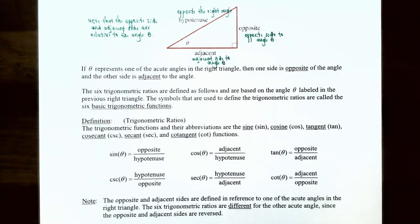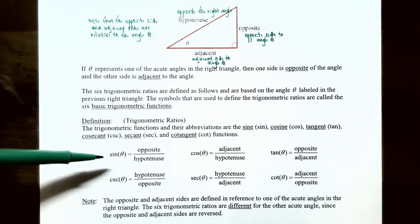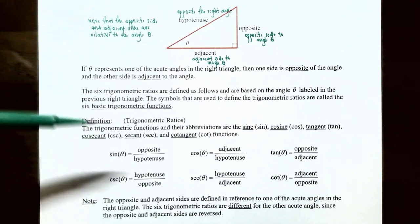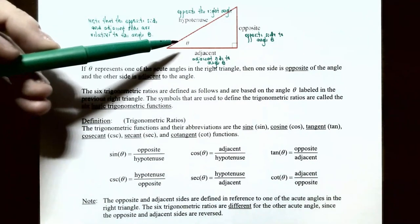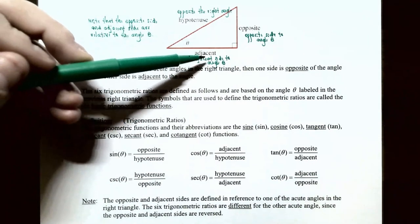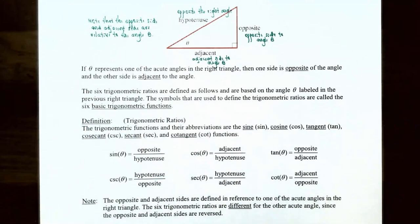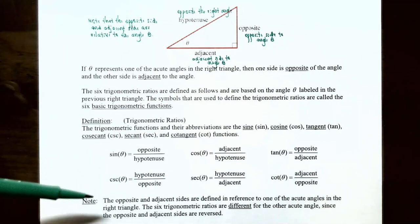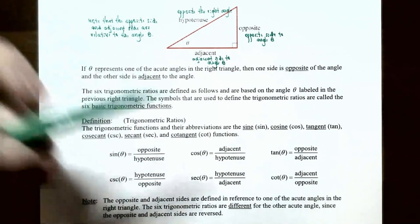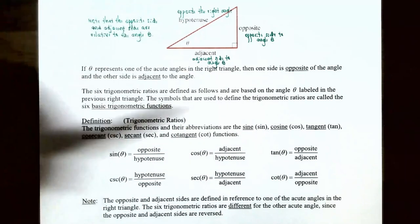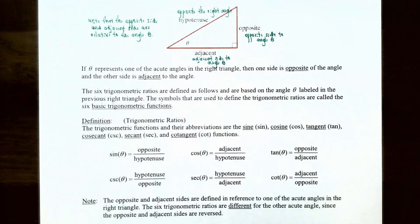The trigonometric ratios are as follows. Sine of theta is the opposite side divided by the hypotenuse. Cosine of theta is the adjacent side divided by the hypotenuse. Tangent of theta is the opposite side divided by the adjacent side. Cosecant of theta is the reciprocal of sine — the hypotenuse divided by the opposite. Secant of theta is the reciprocal of cosine — the hypotenuse divided by the adjacent. Cotangent of theta is the reciprocal of tangent — adjacent divided by opposite.